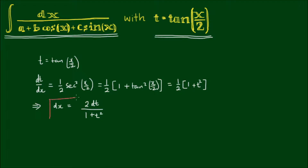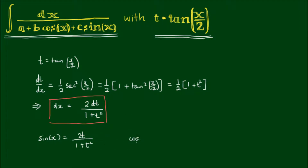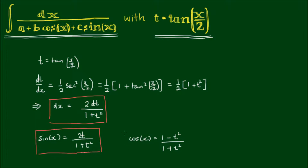Let's keep this in mind as it is important. The other key formulas to remember are: sin(x) = 2t / (1 + t²), and cos(x) = (1 - t²) / (1 + t²). If you're wondering how we get these results, I'll include a link to a previous video that derives these formulas.